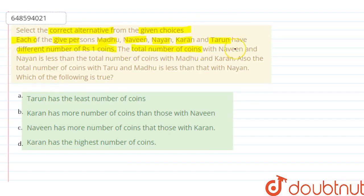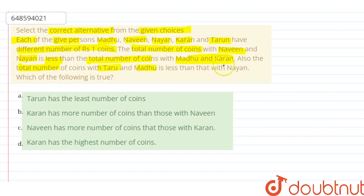The total number of coins with Naveen and Nayan is less than the total number of coins with Madhu and Karan. Also, the total number of coins with Tarun and Madhu is less than that with Nayan. Which of the following is true?